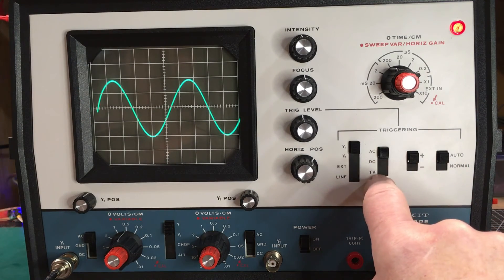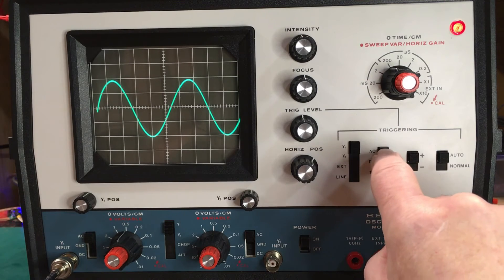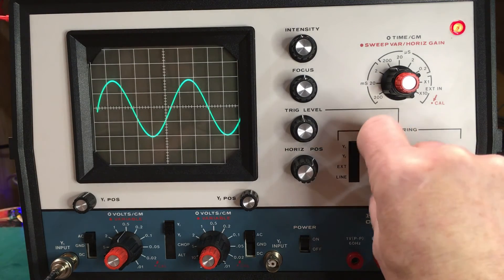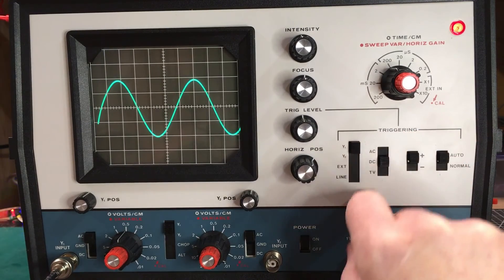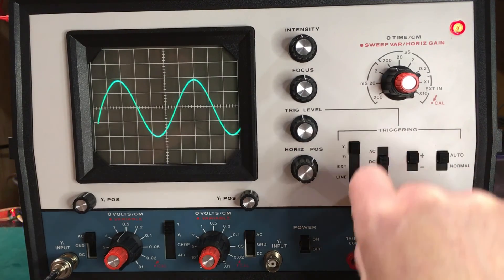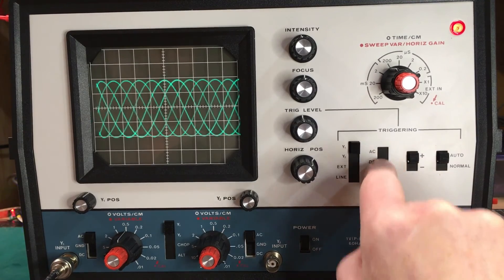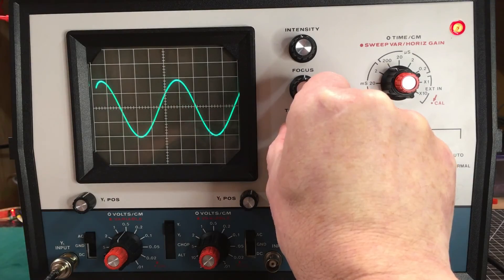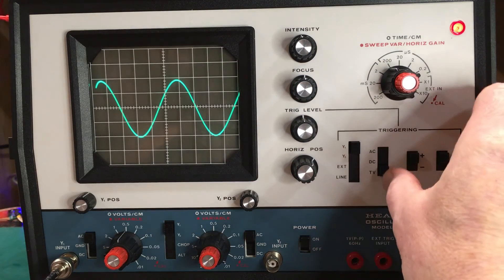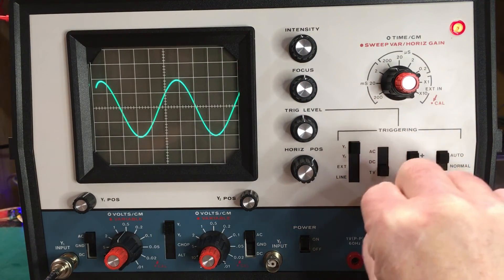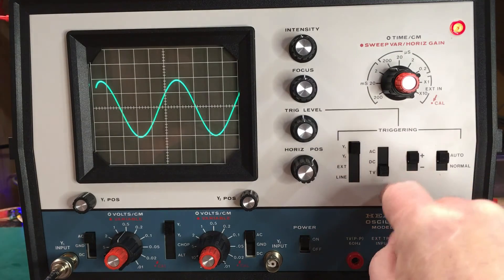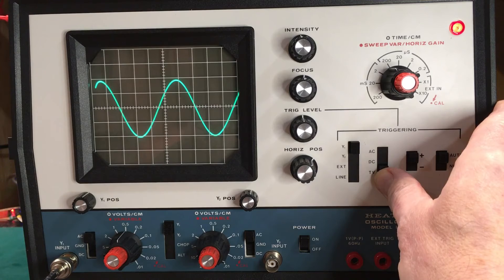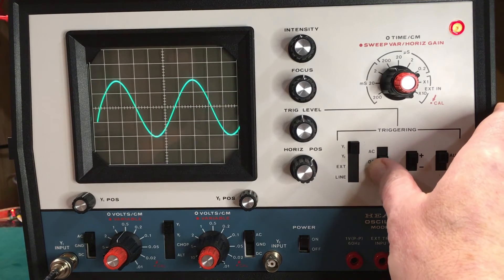And here are the different couplings here. In this case, we have AC, which goes through a capacitor. Take out any DC component. We have DC. In this case, we don't have any DC components, so it's not going to make a lot of difference. And then TV. TV is a low-pass filter. Basically, that's for working on TV sets. So you can trigger, instead of on arbitrary noise and other things like that, you can trigger on the vertical sync rate of the television set. Let's put it back here to DC.